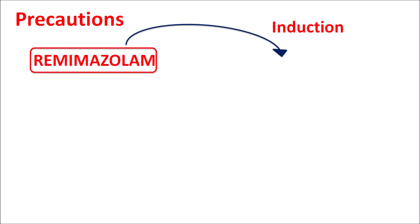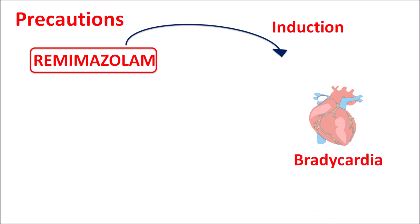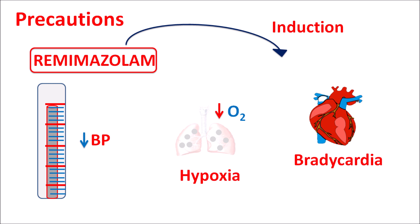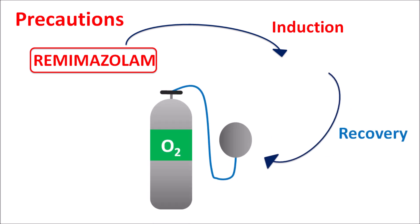Regarding precautions: when remimazolam is given during induction, the heart rate may be reduced resulting in bradycardia, oxygen levels may drop resulting in hypoxia, and a sudden fall in blood pressure can also be observed. All these should be closely monitored. During recovery, oxygen supply should be maintained to reduce hypoxia, and flumazenil should be available as it can antagonize remimazolam and reduce its toxic effects.